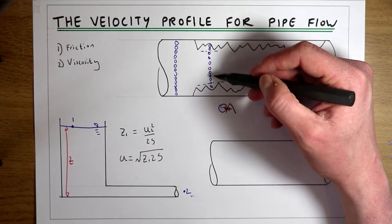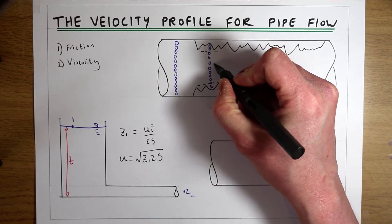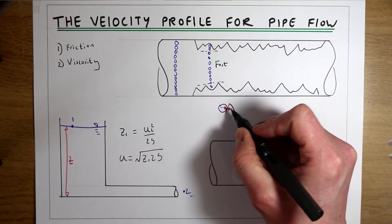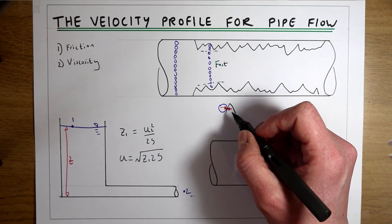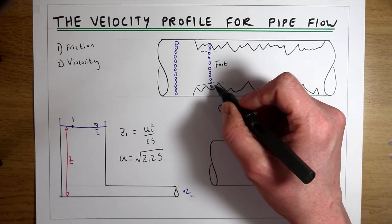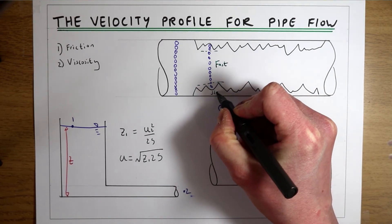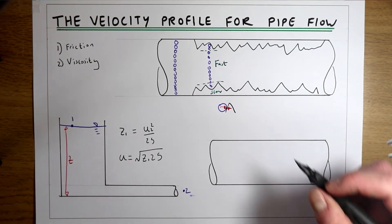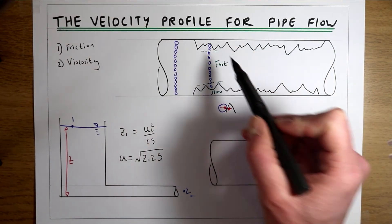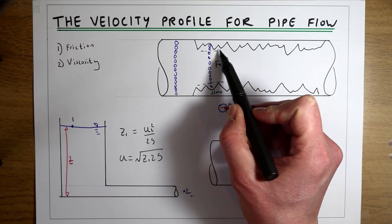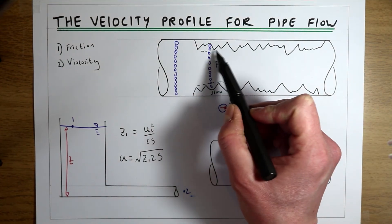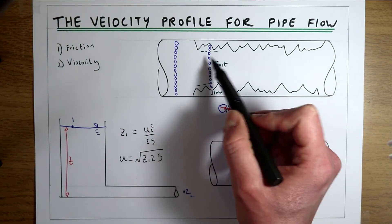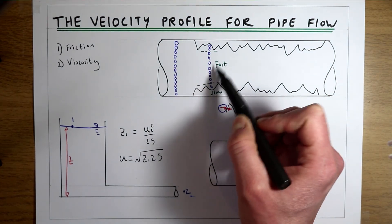The particles of water that are free from this friction will be going fast. The particles of water right at the wall will be going at zero velocity, and the ones somewhere in between will be going slow. So what we're going to get — if the only thing we were worrying about was friction — is a slow zone within the layer of discontinuities by the pipe wall and a fast zone in the middle of the pipe.